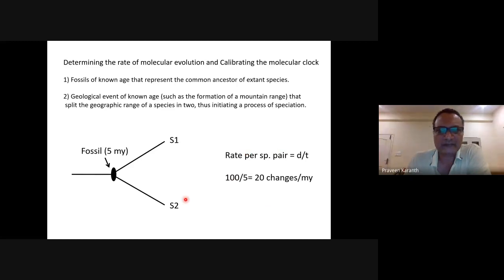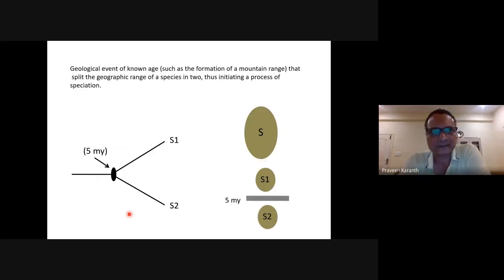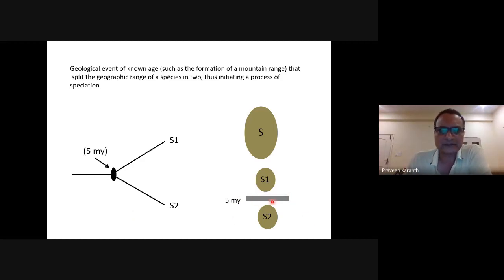Once we have this rate we can apply it to other parts of the tree and date other nodes — that's the whole idea of molecular dating. It's actually very simple; one can do this by hand. Here's an example of using a geological event such as formation of a mountain range to calibrate the molecular clock.